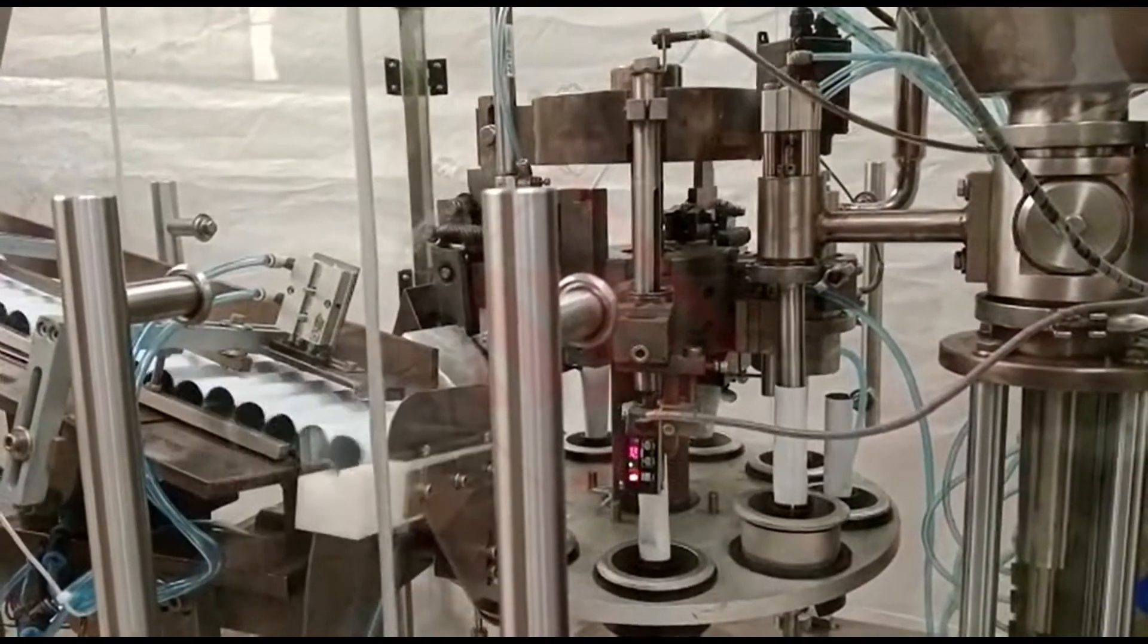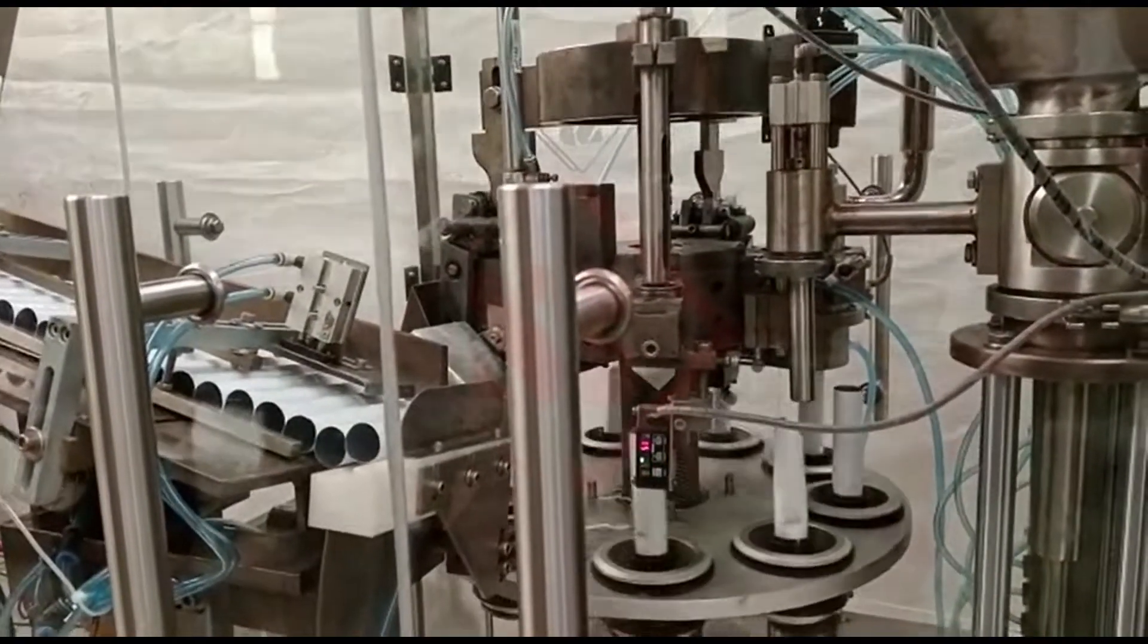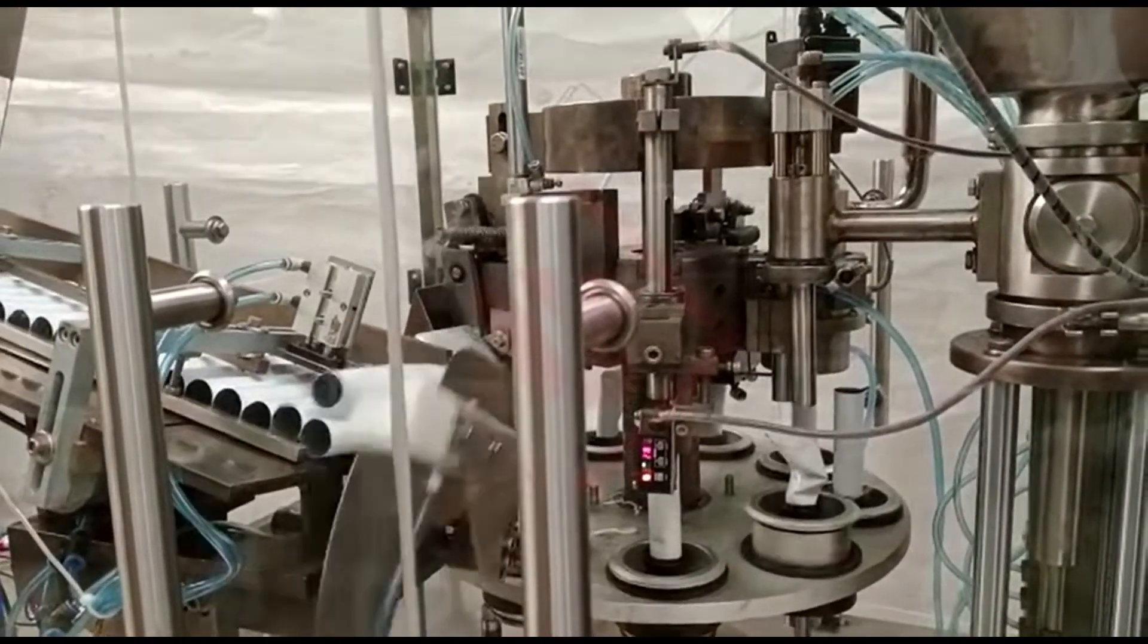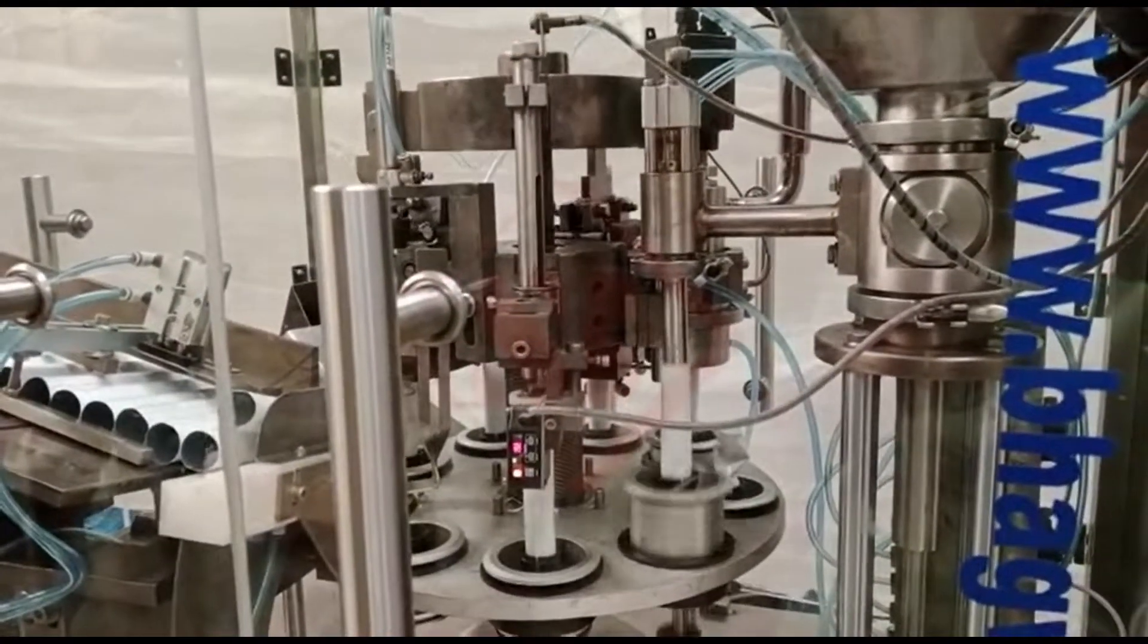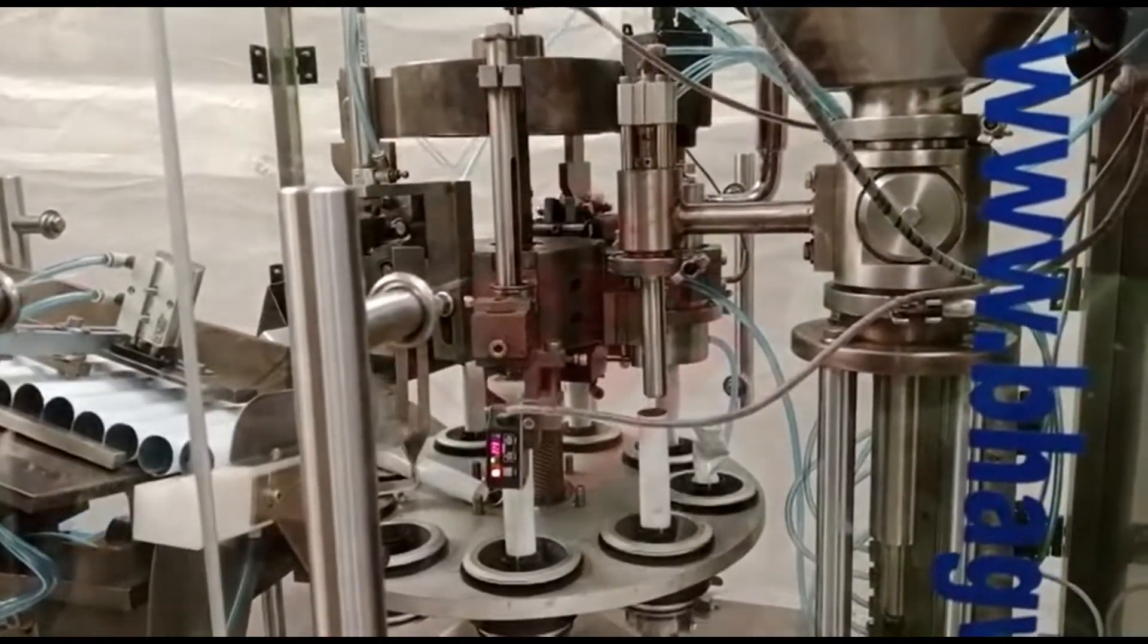Tube Feeding System: This system allows for the continuous supply of empty tubes to the filling station. The tubes are typically stored in a hopper or magazine and fed into the machine one by one.